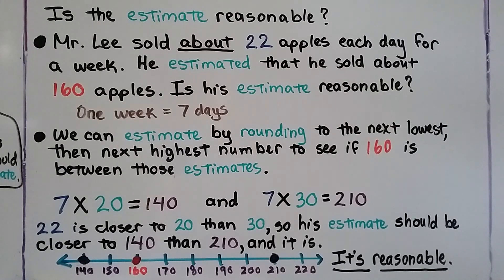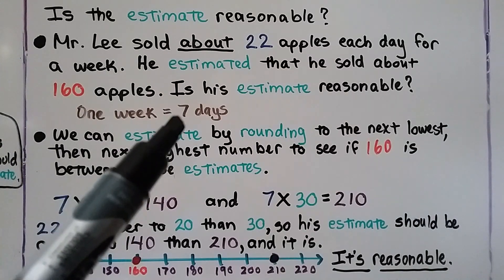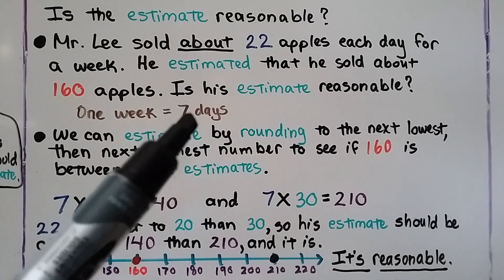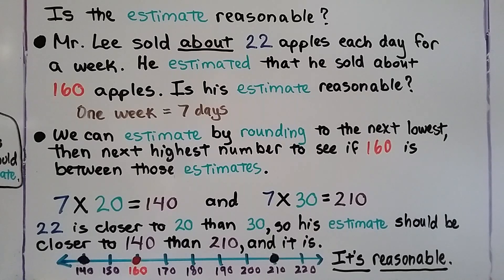Is the estimate reasonable? Mr. Lee sold about 22 apples each day for a week, and he estimated that he sold about 160 apples. Is his estimate reasonable? One week equals seven days, so he sold 22 apples every day for seven days — we're multiplying by 7. We can estimate by rounding to the next lowest and next highest number to see if 160 is between those estimates.